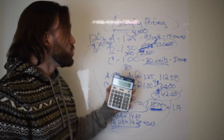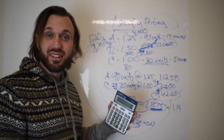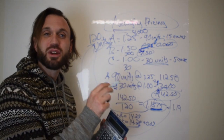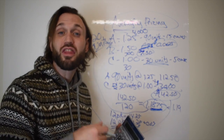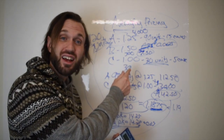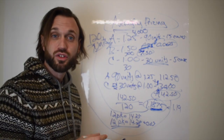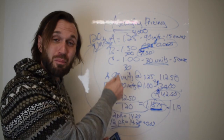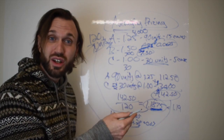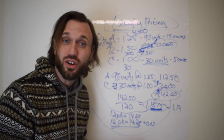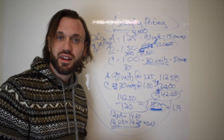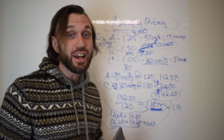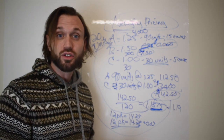Seven dollars and fifty cents doesn't seem like much, but scale it up: $7.50 × 1,000 orders = $7,500. If you do that quarterly, $7,500 × 4 = $30,000 a year saved — all from shopping around to your distributors and averaging pricing.